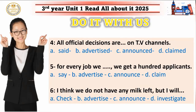Final activity questions. Number four: 'All official decisions are ___ on TV channels.' Options: advertised, announced, or claimed. Since official decisions are formal announcements — the correct answer is 'announced'. Number five: 'For every job, we get a hundred applicants.' Is it advertised, announced, or claimed? Since it's about a job people apply for, I'll leave this as an assignment for you.